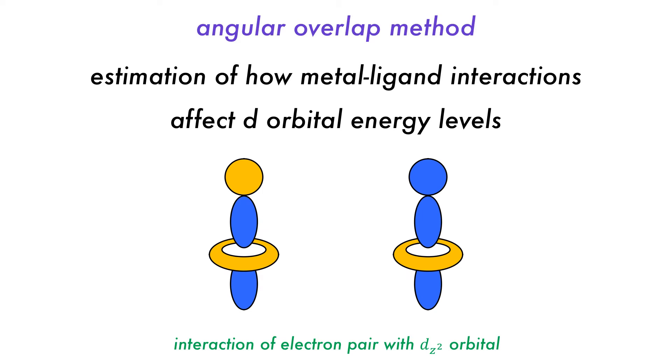It is based on the sigma interaction of a single pair of electrons with the dz-squared orbital. When they are in phase, the interaction energy is defined as plus e-sigma, and when they are out of phase, it is negative e-sigma. Remember though, that plus e-sigma is a negative number because the interaction is favorable, and minus e-sigma is positive because it is an unfavorable interaction.